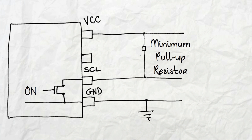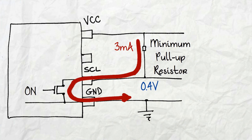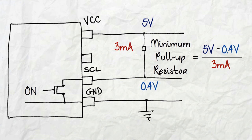So, the minimum value of the pull-up resistor is given by the worst-case situation, when the voltage at the clock line is at 0.4 volts, and the maximum current of 3 milliamps is flowing through the resistor. For a power supply of 5 volts, this gives a minimum resistor of 1.53 kilo-ohms, and for a power supply of 3.3 volts, this gives a resistor value of 970 ohms.